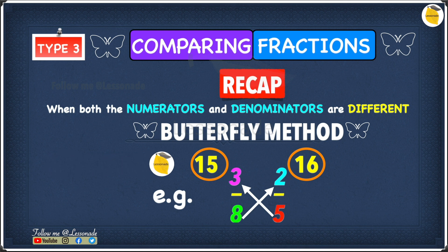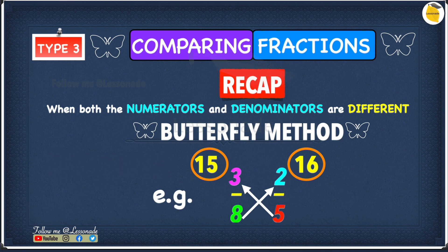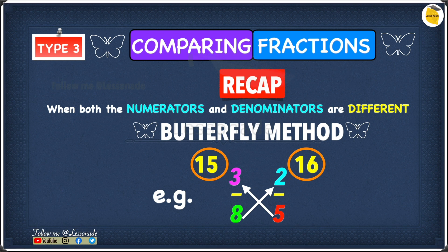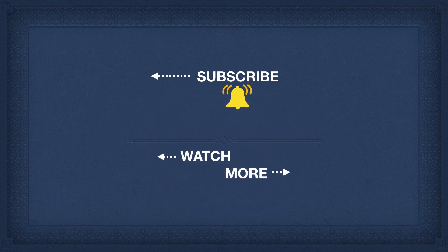When both numerators and denominators are different, use the butterfly method — cross multiply from the denominator of one number to the numerator of the other. Five times three gives fifteen, and eight times two gives sixteen. Therefore two over five is greater than three over eight. To learn more on 11 plus maths, click the video on the right, and to learn the previous topic click the video on the left. Thank you so much for watching — please subscribe and I'll see you next time.